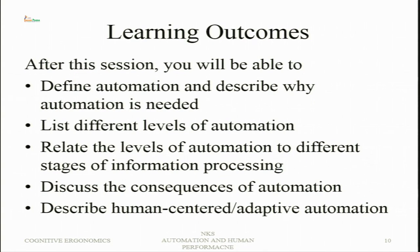Now we move to automation. After this session on automation, we will be able to define automation and describe why it is needed, list different levels of automation, and understand how all levels can be understood in terms of the information processing model — that is, different levels correspond to different stages of information processing.